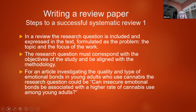In a review paper, the research question is included and expressed in the text and is formulated as the research problem, which becomes the topic and focus of the work. It must correspond with the objectives of the study and be aligned with the methodologies. For example, for an article investigating emotional bonds in young adults who use cannabis, the research question might be: 'Can insecure emotional bonds be associated with a higher rate of cannabis use among young adults?' The aims and research questions really guide the procedures and methods used in your review.